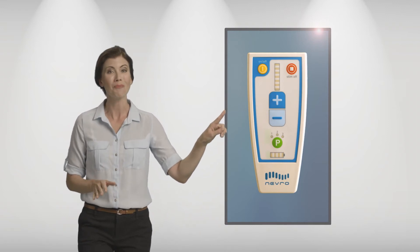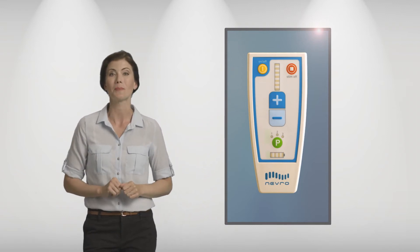To use the remote, it first needs to be turned on. To turn the remote on, hold down the yellow button until it beeps and the lights turn on.